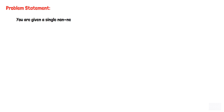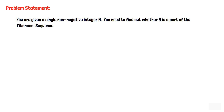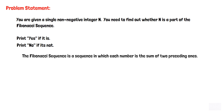In this video we will create a flowchart for the given problem statement: you are given a single non-negative integer n, and you need to find out whether n is part of the Fibonacci sequence — print yes if it is, print no if it's not. The Fibonacci sequence is a sequence in which each number is the sum of the two preceding ones, where 0 and 1 are the initial values.